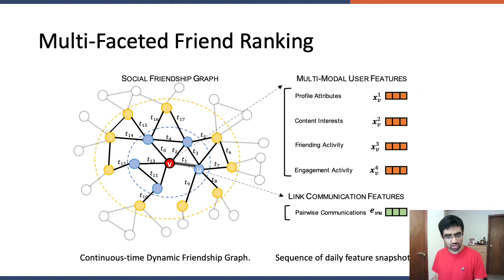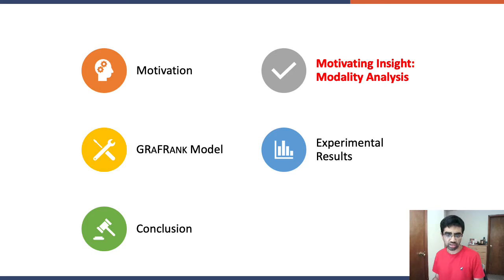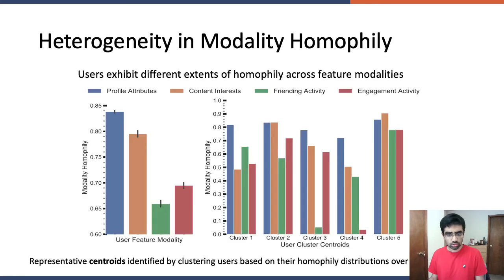In our work, we design a graph neural network architecture, GraphRank, to capture knowledge from multiple user feature modalities and pairwise interactions. Now that we have formulated the problem of multifaceted friend ranking in social platforms, we present an empirical analysis to investigate attribute homophily with respect to the different feature modalities. This provides us insights into various factors that impact friendship formation and guide our model design. Later, we will introduce the key technical details of our framework GraphRank, followed by experimental results and conclusion.